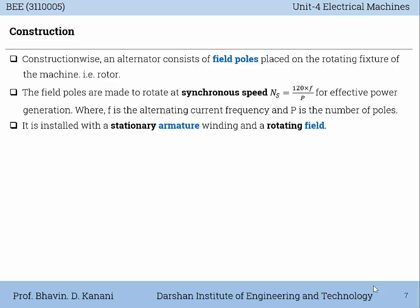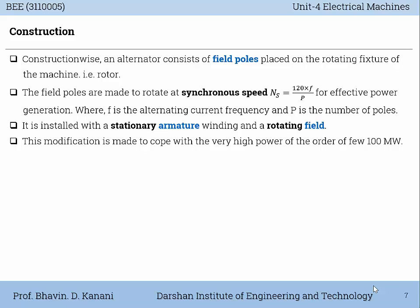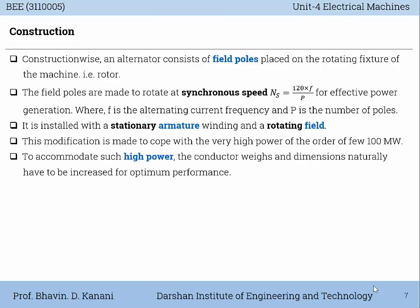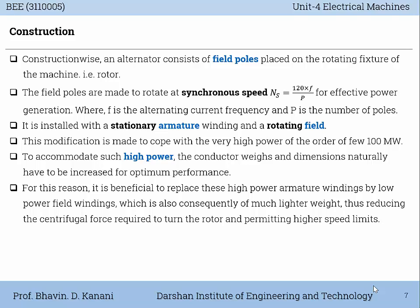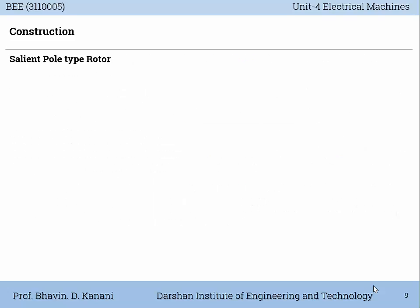It is installed with a stationary armature winding and rotating field. This modification is made to cope with the very high power of the order of a few hundred megawatts. To accommodate such high power, the conductor weights and dimensions naturally have to be increased for optimum performance. For this reason, it is beneficial to replace these high power armature windings by low power field windings, which are consequently of much lighter weight, thus reducing the centrifugal force required to turn the rotor and permitting higher speed limits.